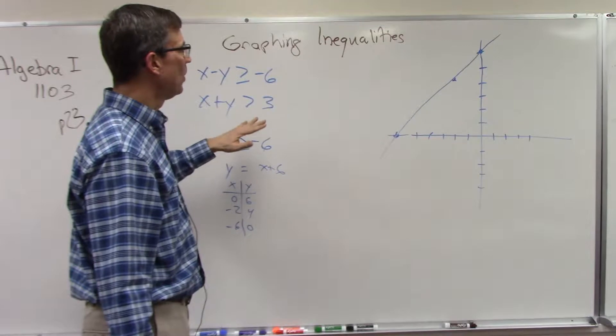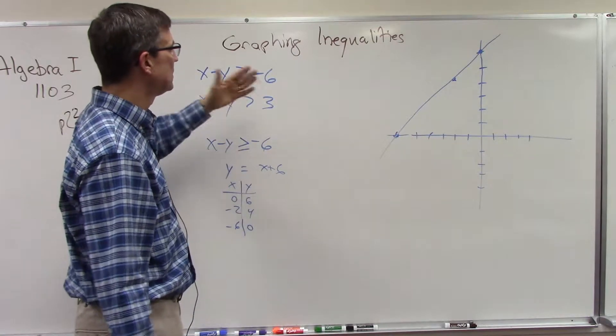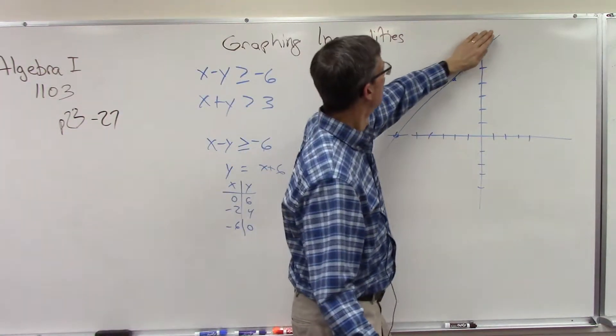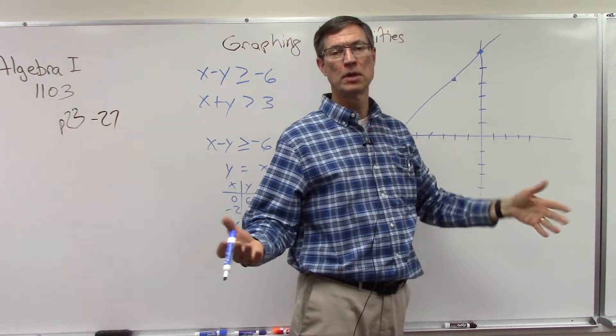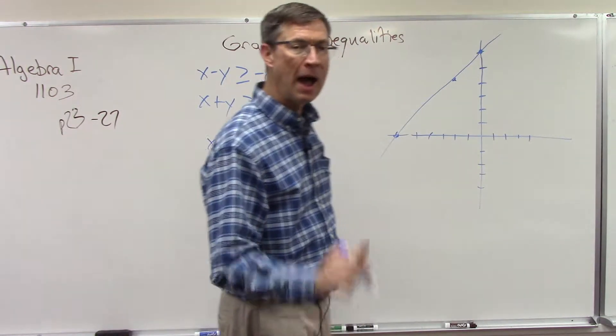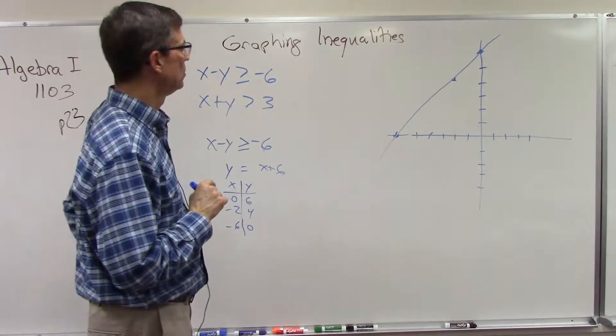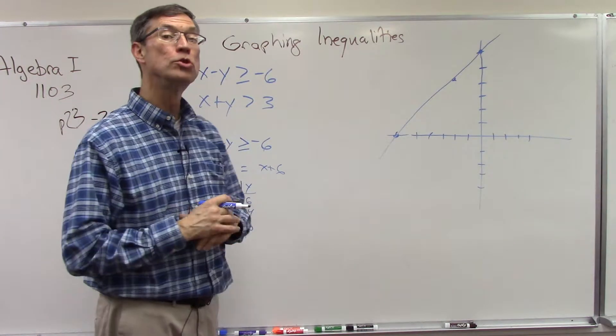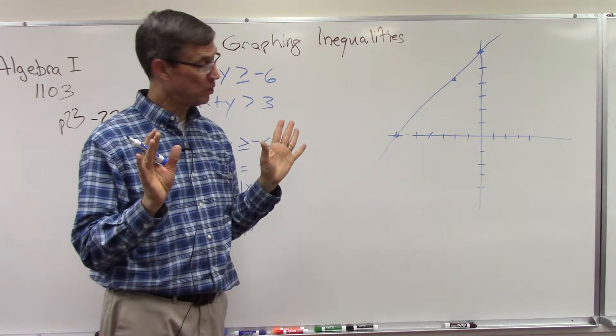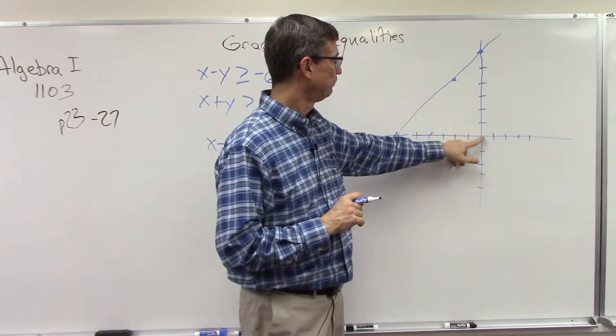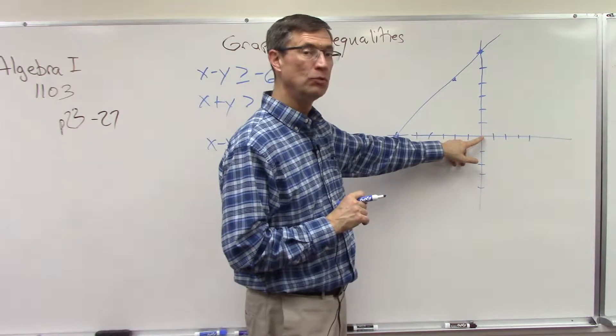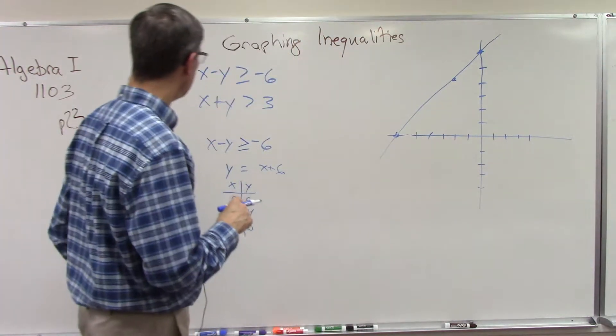Then we have to figure out we're actually shading one side of this line—either this side of the line get shaded in or this side. There's only two choices: shade above it, shade below it. How do we know which side to shade? There's two ways and both ways work perfectly. One is you take the point zero zero because that's real easy to plug in.